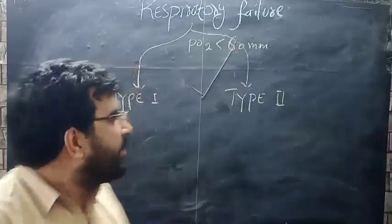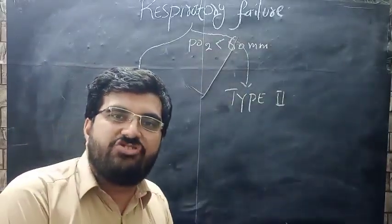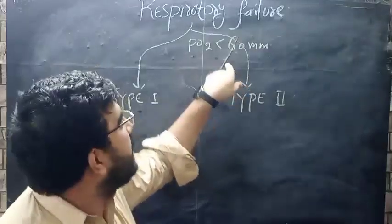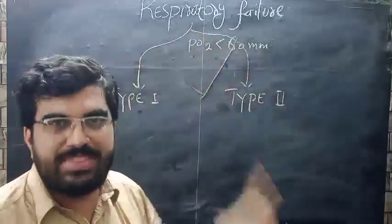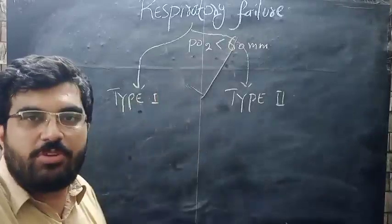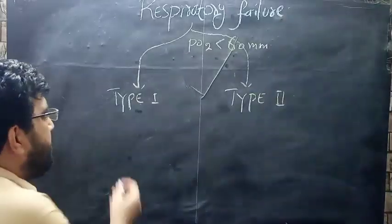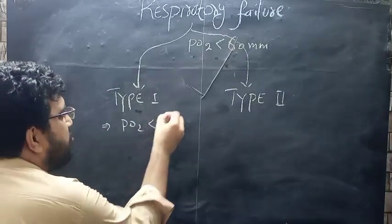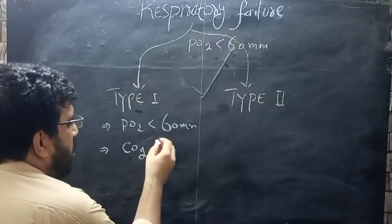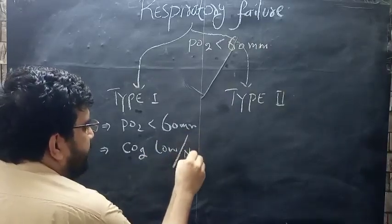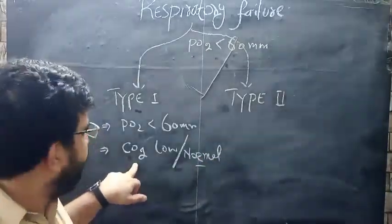In Type 1 respiratory failure, your PO2 is less than 60 mmHg. You cannot define respiratory failure without ABGs having a PO2 less than 60 — that is a compulsory criterion. In Type 1, the CO2 is either low or normal.